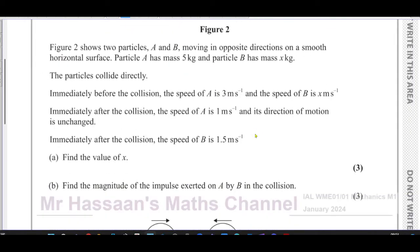The particles collide directly. Immediately before the collision, the speed of A is 3 meters per second and the speed of B is X meters per second. Immediately after the collision, the speed of A is 1 meters per second and its direction of motion is unchanged. It's just going slower.